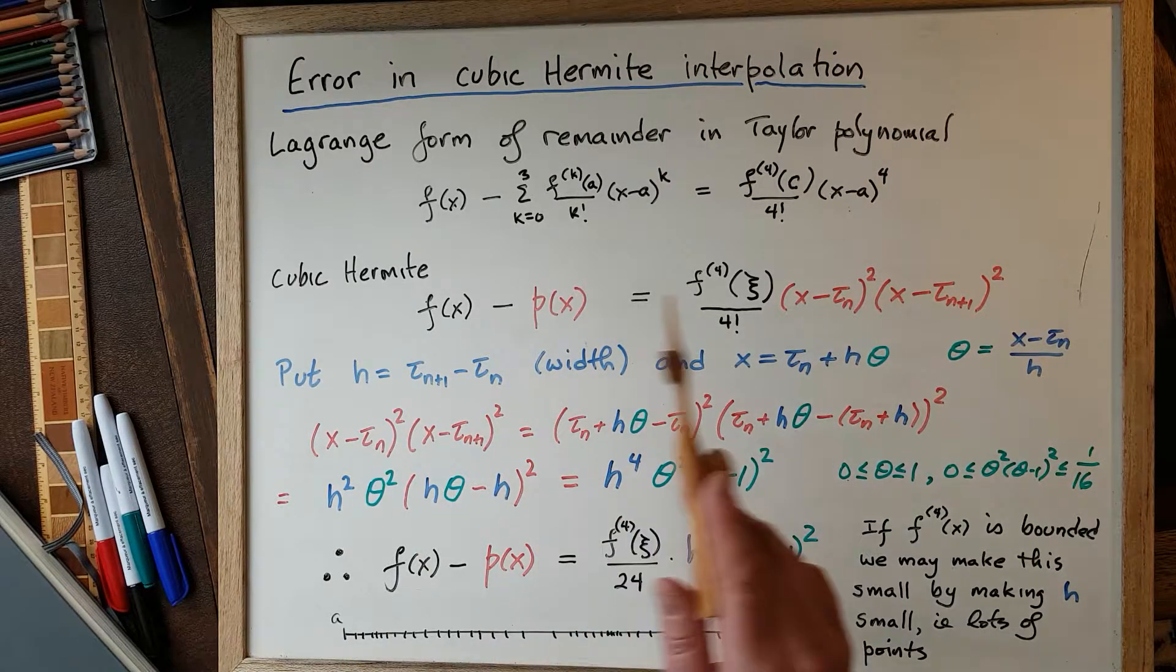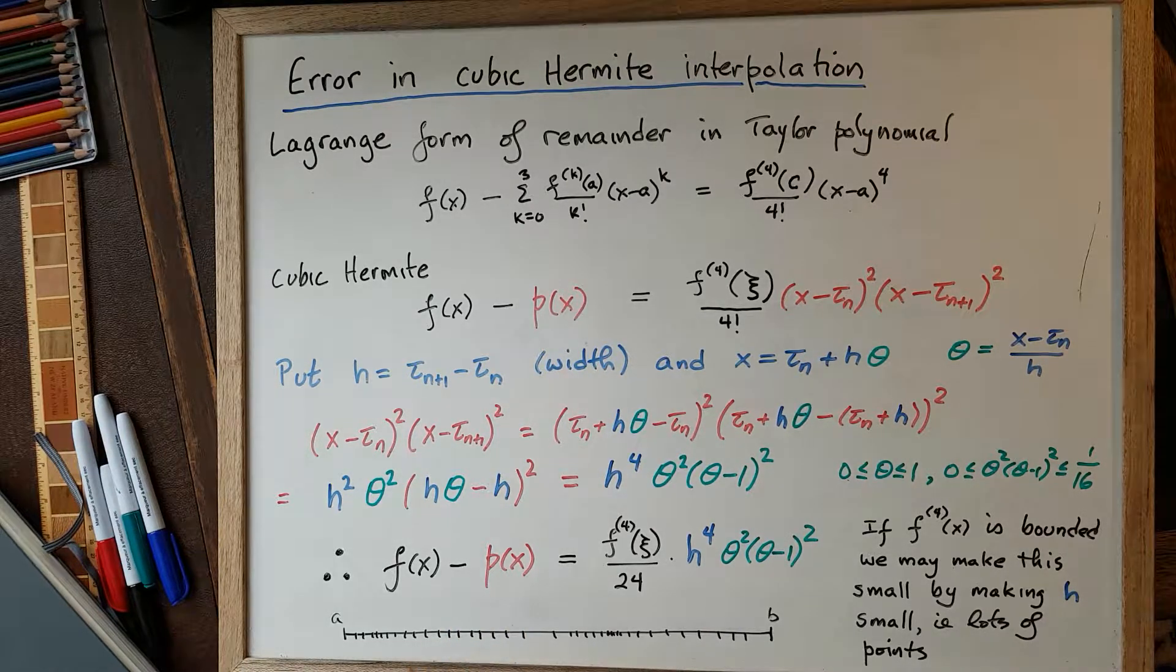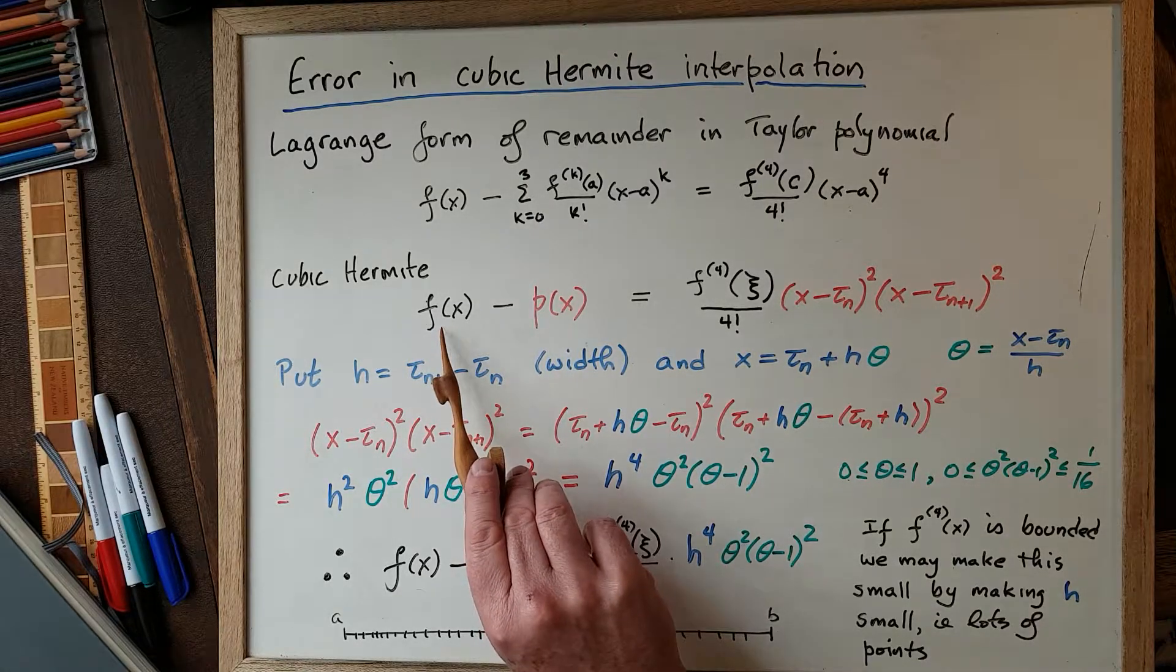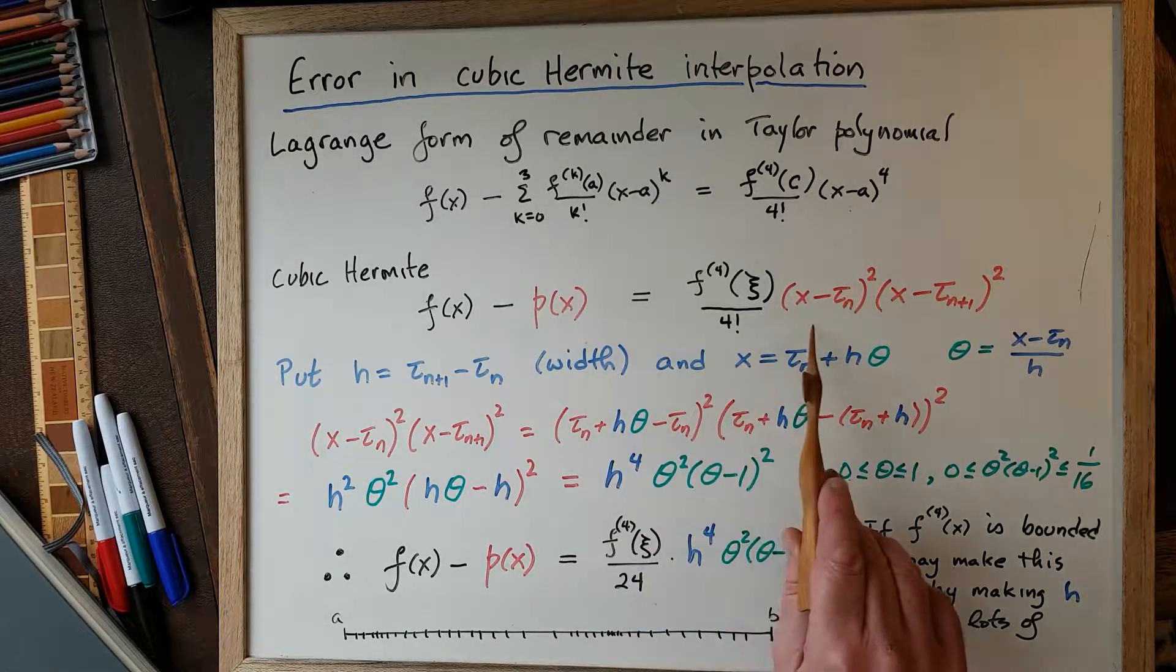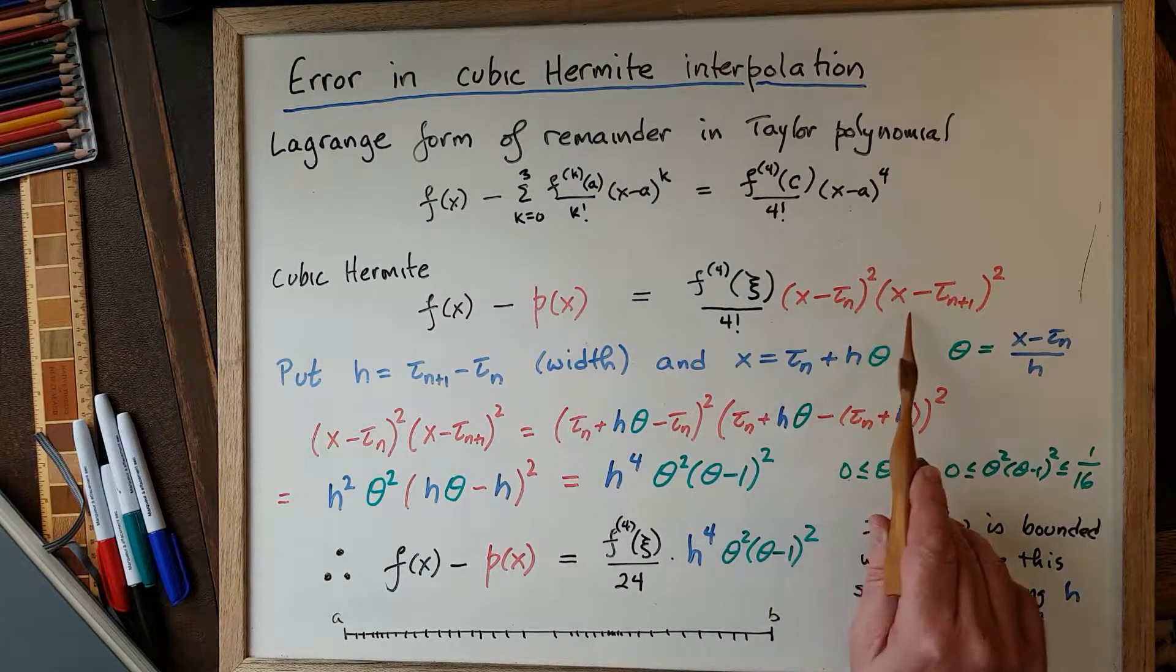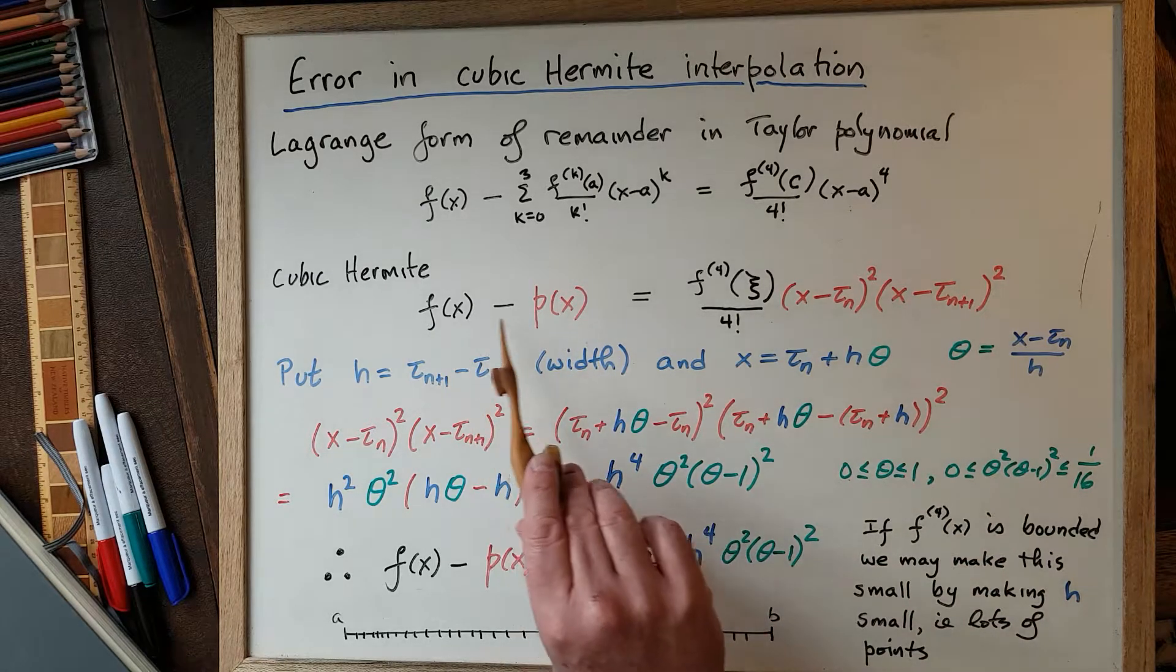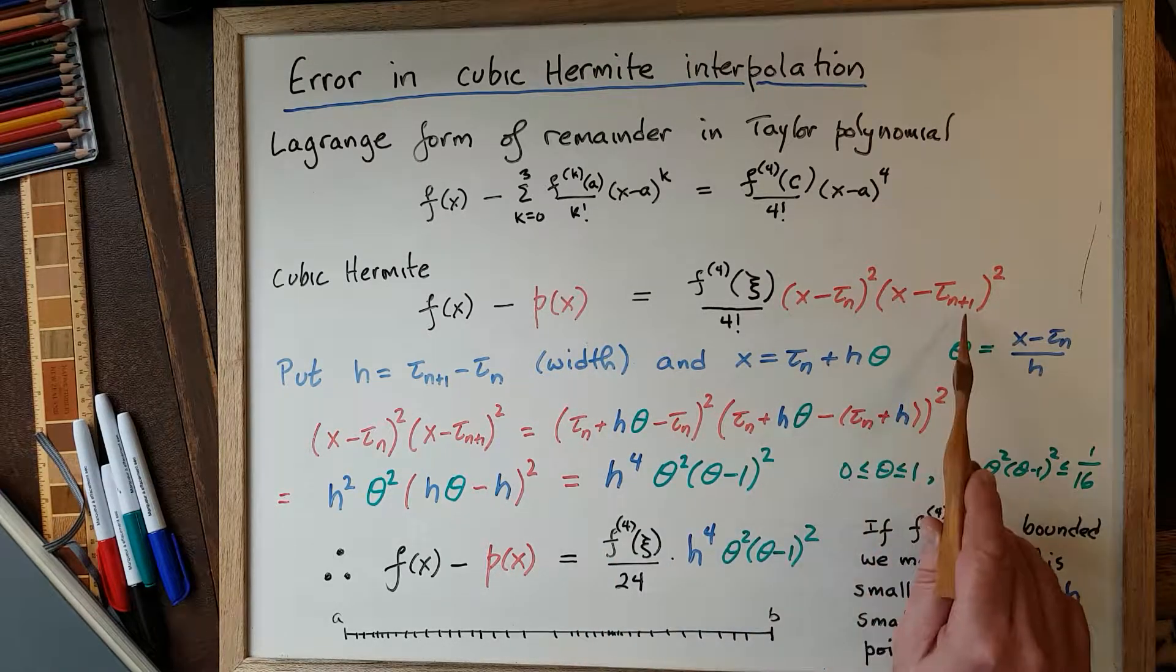Just like the Lagrange form of the remainder in Taylor polynomial and in Lagrange interpolation, we know that the error in cubic Hermite interpolation, the difference between the function we're trying to interpolate and the cubic Hermite interpolating polynomial, is proportional to the node polynomial. The node polynomial in this case is (x - τ_n)² times (x - τ_{n+1})². So the difference between f and the node polynomial is 0 at x equals τ_n and it's 0 when x equals τ_{n+1}.